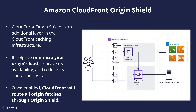What about Amazon CloudFront Origin Shield? CloudFront Origin Shield is an additional layer in the CloudFront caching infrastructure that helps to minimize your origin's load, improve its availability, and reduce its operating costs. If your origin is located outside of AWS, performance can also be improved by leveraging AWS's global private backbone network based on Origin Shield. Once enabled, CloudFront will route all origin fetches through Origin Shield and only make a request to your origin if the content is not already stored in Origin Shield's cache.